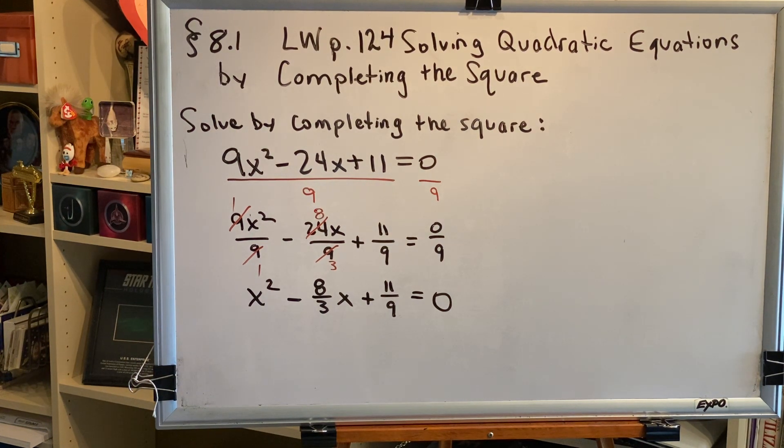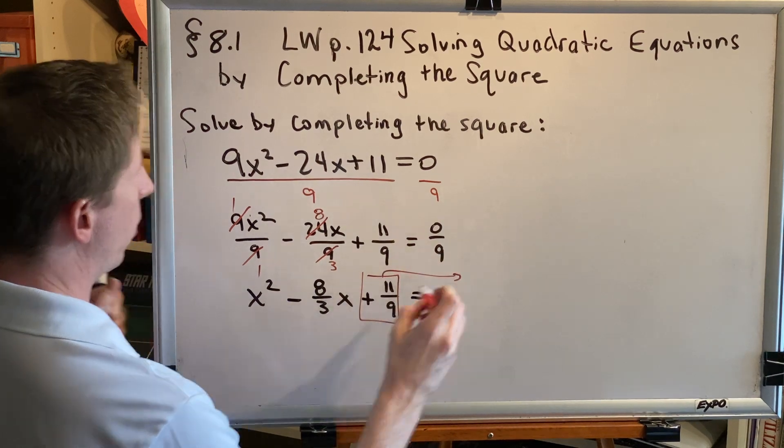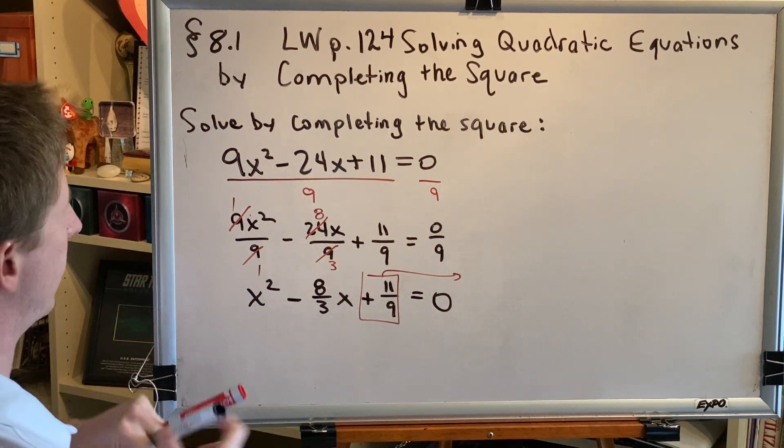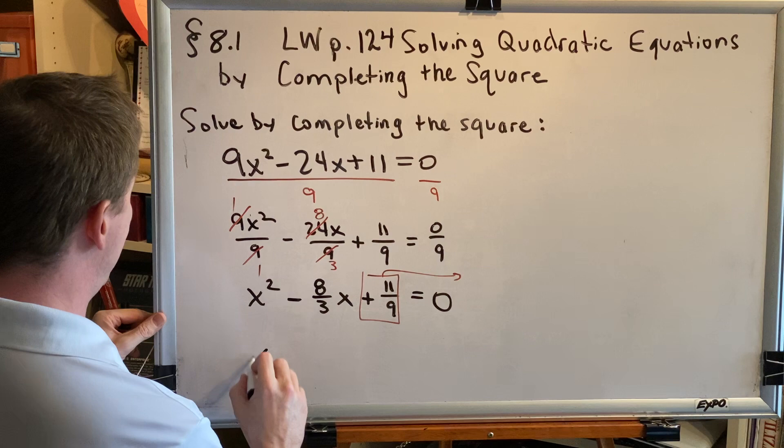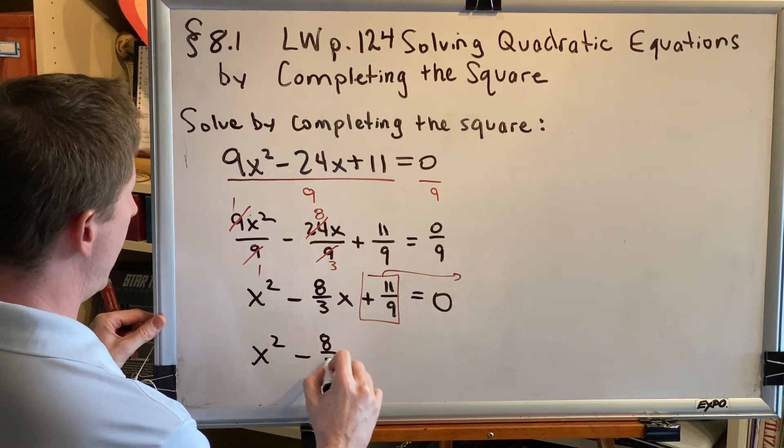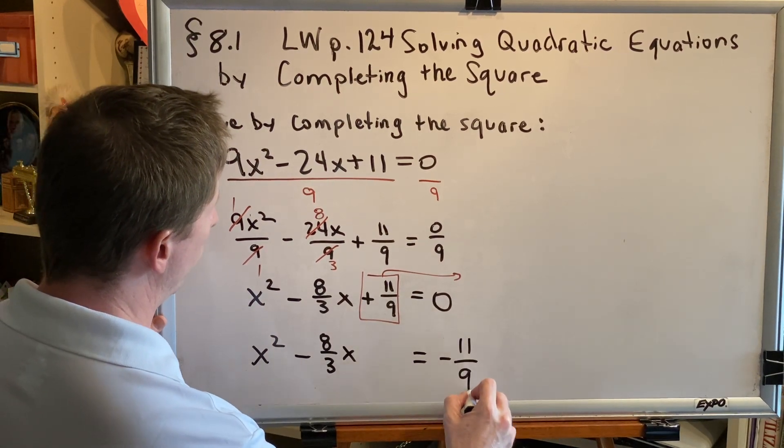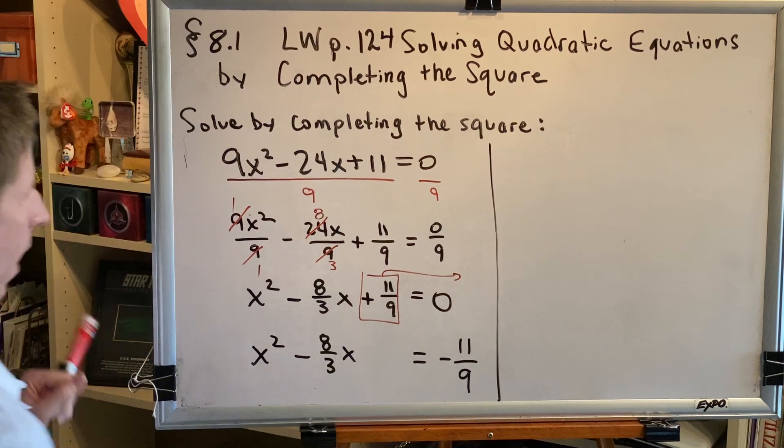Step 2 says take all terms with a variable and have them on the left. All terms with no variable, move them to the right. So this term needs to move to the right-hand side. When a term changes sides, it changes signs. So we get x squared minus 8 thirds x equals negative 11 ninths.